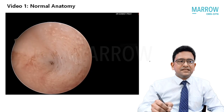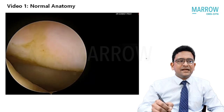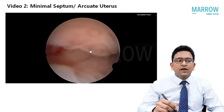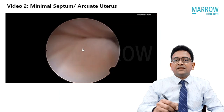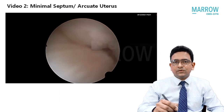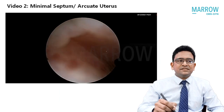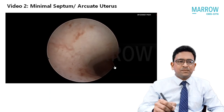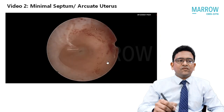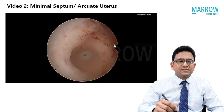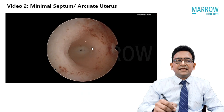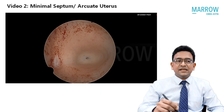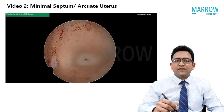Let us now move on to the next slide, which shows a minimal septate or arcuate uterus. The telescope is going inside the uterine cavity; we gradually negotiate through the cavity, and the internal os is slowly coming up. As the telescope finds its way through the internal os, you will see in this area that there is a dip in the center.